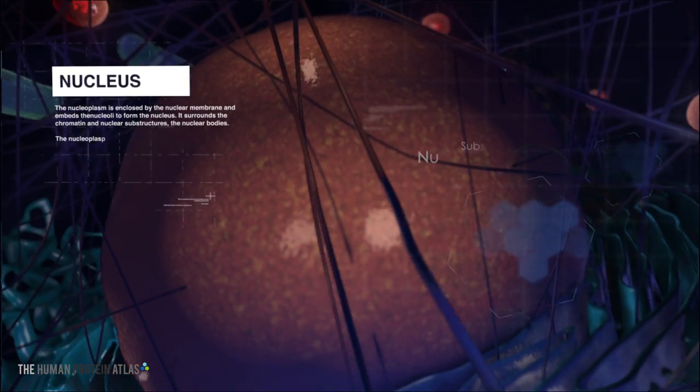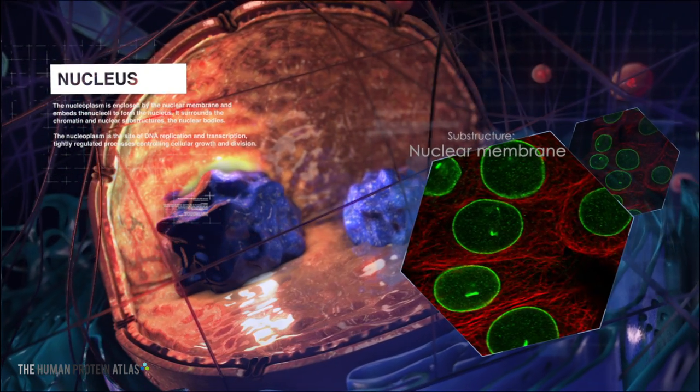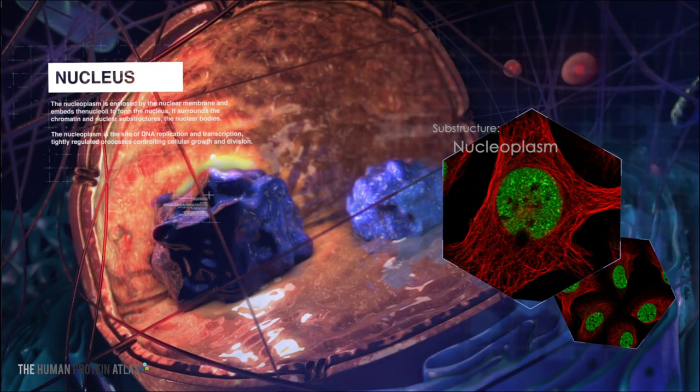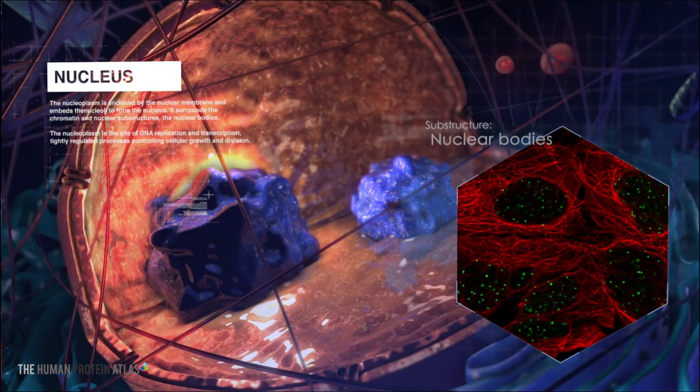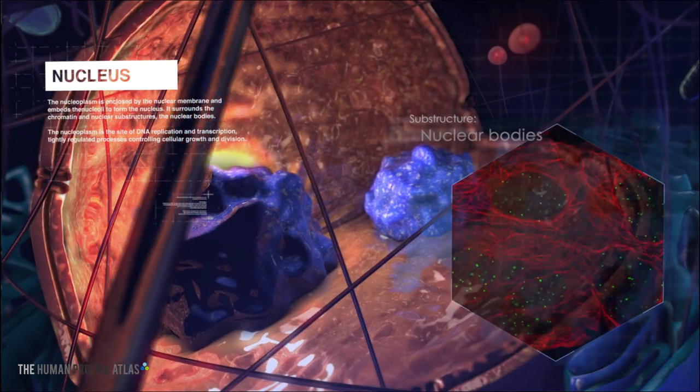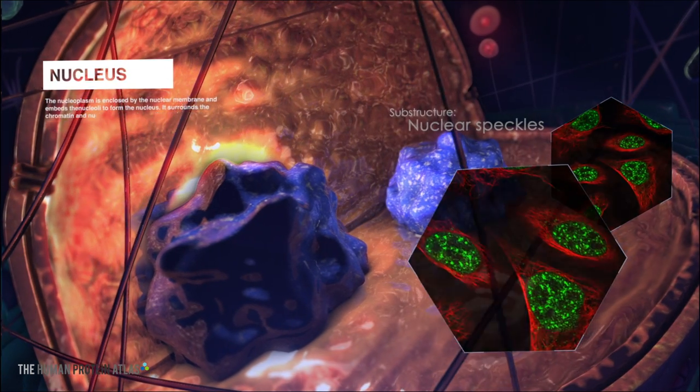Our genetic information, encoded by the DNA, is contained in the nucleus, shielded from the cytoplasm by the nuclear membrane. Sub-structures in the nucleus perform a multitude of functions, including DNA repair, replication and transcription to RNA, which is followed by RNA splicing.